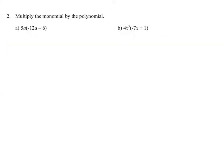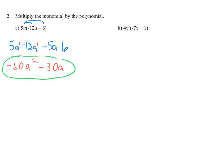Let's multiply the monomial by the polynomial using the distributive property. We're multiplying 5a times the entire quantity negative 12a minus 6 — so 5a times the first term and 5a times the second term. 5 times negative 12 is negative 60, and a times a is a squared, minus 5 times 6 is 30a. Our solution is negative 60a squared minus 30a.